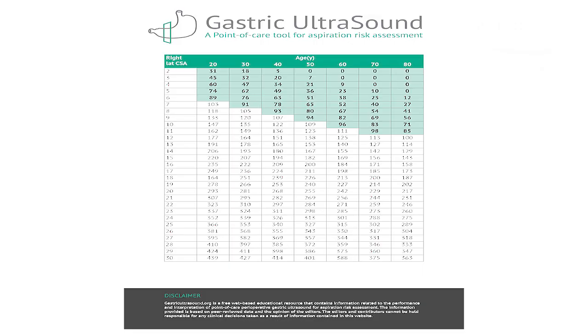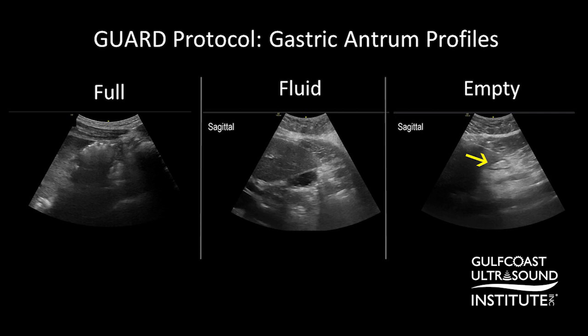Now we'll take that 14.78 centimeters squared and look at a chart from gastricultrasound.org, using this plus the patient's age to see if she is at risk for aspiration. Patients with an empty stomach will have more of a bullseye-type appearance, while those that have recently eaten will have a more complex echo texture. Patients with a complex appearance are already considered high risk and will not require a gastric cross-sectional area determination.